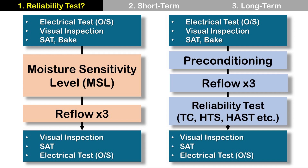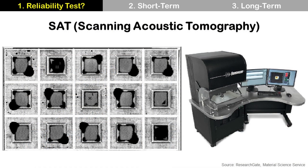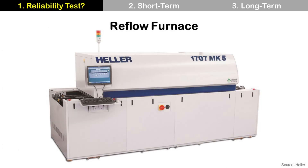MSL test is to determine the floor life — the time span the package can be exposed after opening the moisture barrier bag and before board mounting. The procedure continues with three-time reflow, then reliability test, visual inspection, SAT and electrical open/short test again. Here is one example of a SAT image for the package and SAT machine, and an example of a reflow furnace for the reflow process.